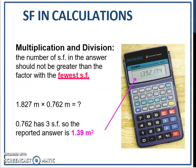Next we proceed to significant figures in calculation. For multiplication and division, the number of significant figures in the answer should not be greater than the factor with the fewer significant figures.